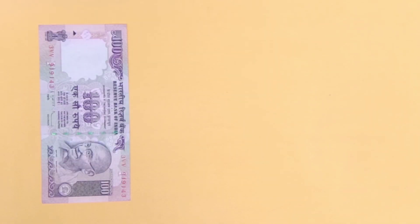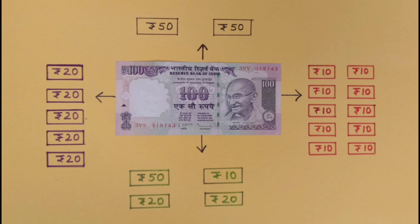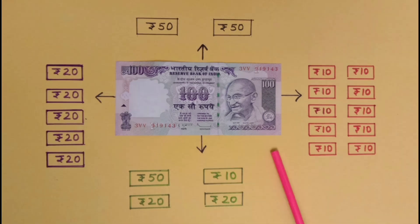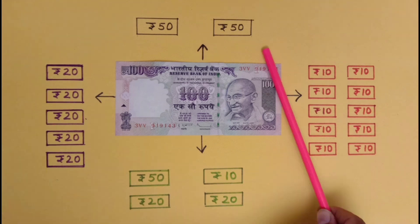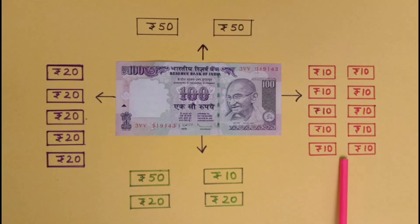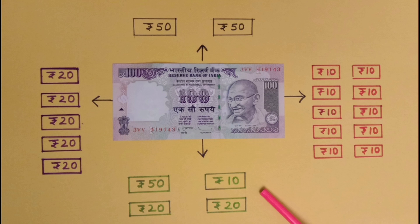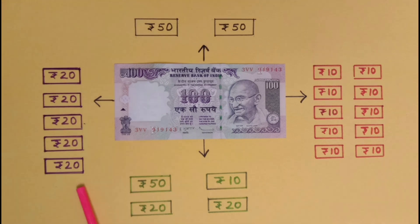What do you see here? It is a 100 rupee note. We have to draw those notes and coins which are equal to the value of 100 rupees. We can draw different types of notes instead of a 100 rupee note. In place of 100 rupees, we can draw 2 notes of rupees 50. If we draw 10 notes of rupees 10, their value will also be equal to rupees 100. We can also draw 1 note of rupees 50, 1 note of rupees 10, and 2 notes of rupees 20. We can also draw 5 notes of rupees 20 in place of rupees 100.